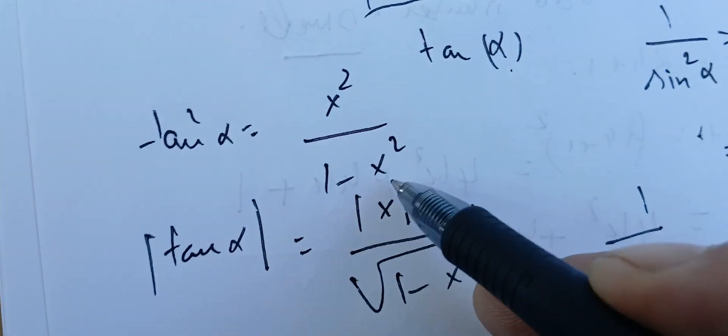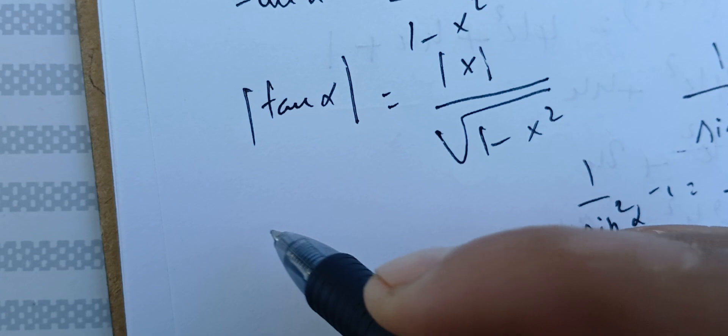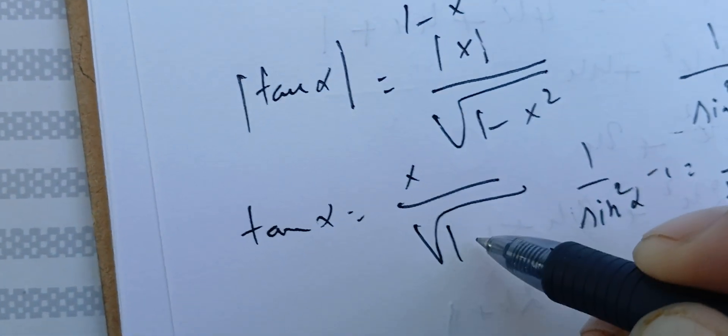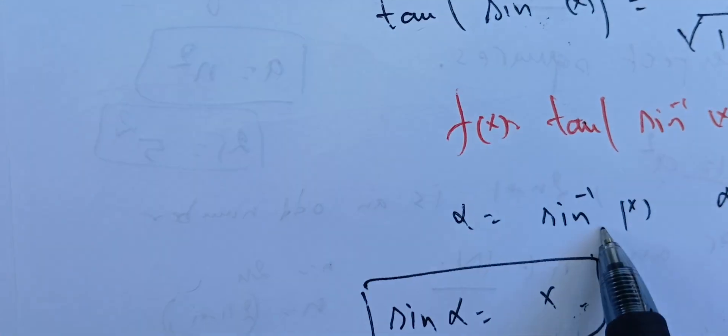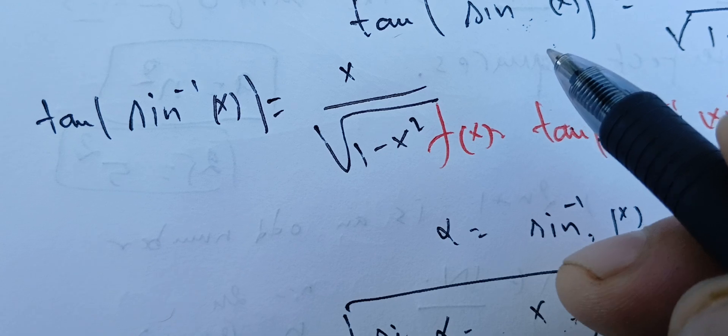Since x is in (−1, 1), tan(α) and x have the same sign. Therefore we can remove the absolute values and conclude that tan(α) = x / √(1 − x²). And since tan(α) is just tan(arcsin(x)), this gives us tan(arcsin(x)) = x / √(1 − x²), which is what we needed to prove.